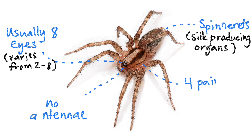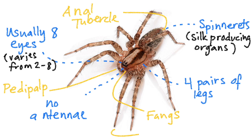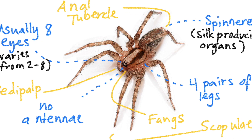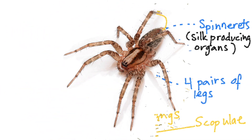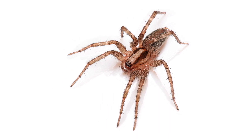They have four pairs of legs attached to their cephalothorax. In the front, they have the pedipalps and the fangs, and in the rear, they have their anal tubercle. On their legs, they have the scopulae, which helps them climb really flat surfaces. So that's the main difference between insects and spiders.